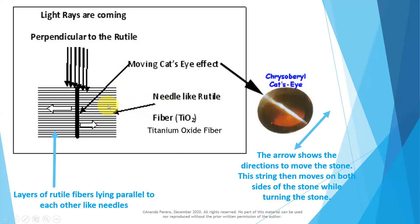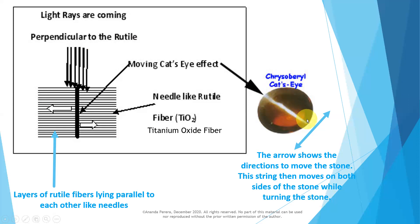These are the needle-like rutile fibers. They consist of titanium oxide — TiO2, titanium oxide fiber. Because of this titanium oxide fiber, this moving cat's eye effect is occurring. When we move the stone to this side and this side, the cat's eye effect moves this side and this side. The arrow shows the directions to move the stone. This line is moving this side and this side — this is called the cat's eye effect.